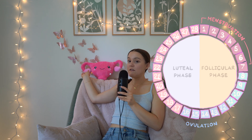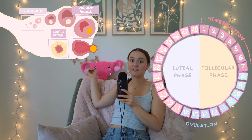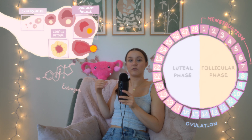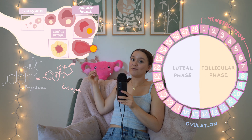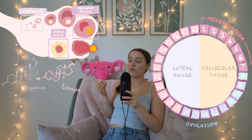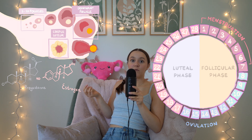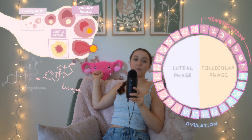Through the luteal phase, your uterus is thickening with nutrients and blood. The follicle that released its egg forms a structure called a corpus luteum — a temporary endocrine gland, which is a structure that releases hormones. It releases estrogen and progesterone, which helps this uterine lining build up with more nutrients and blood. The goal of your menstrual cycle from a purely biological standpoint is to prepare for a pregnancy.